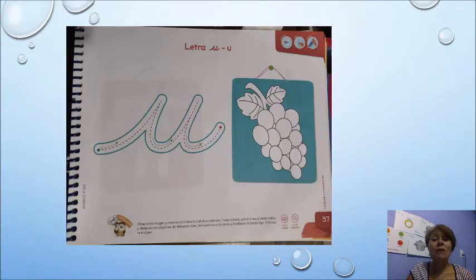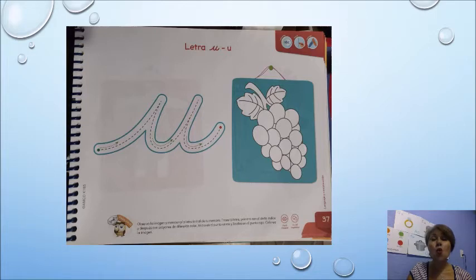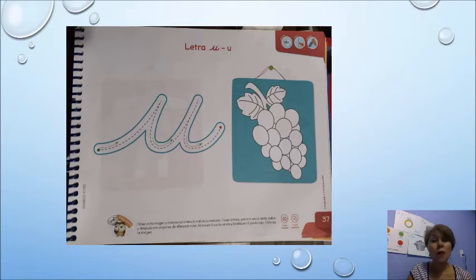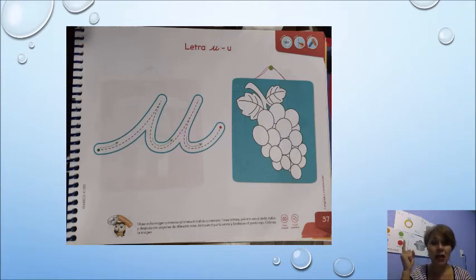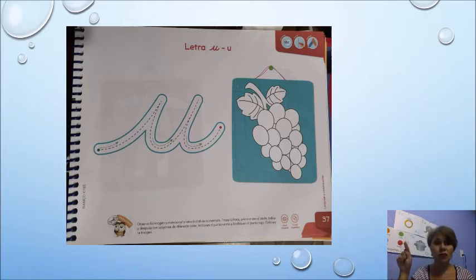Ahora vamos a continuar con nuestra siguiente página. ¿Qué tenemos en este recuadro azul? Unas uvas. ¿Y con qué vocal empieza la palabra uvas? Con la vocal U. Ahora vamos a trazar nuestra U en letra cursiva. Recuerden usar primero su dedo índice para empezar a trazar la vocal. Empezamos por el punto verde y terminamos con el punto rojo.